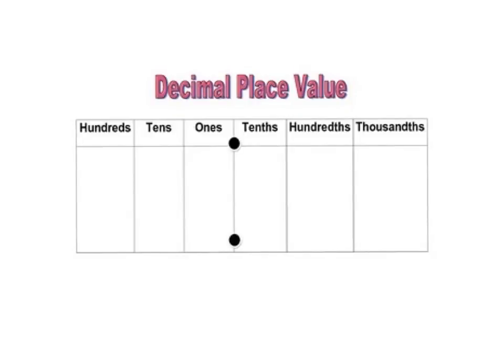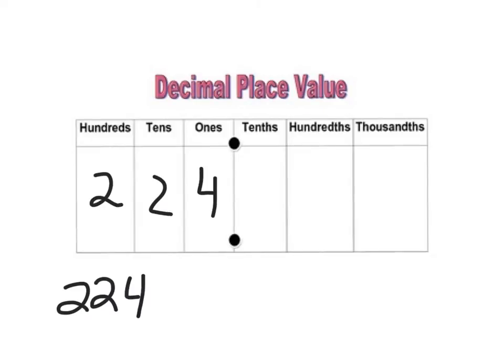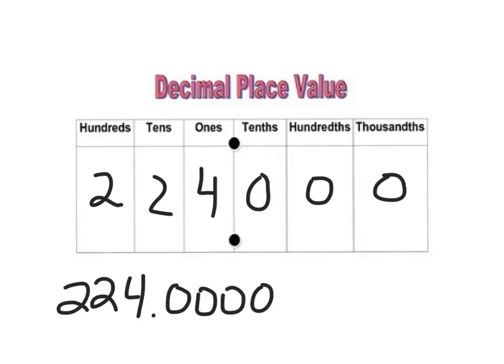It is important to remember that all numbers, even whole numbers, actually have decimals. So if we look at the number 224, we would put our 4 in our ones column, our 2 in our tens column, and our 2 in our hundreds column. There are actually decimals behind it, but they're simply zeros — 224.0000 goes on forever. If it is only zeros behind a whole number, we don't normally write them. They're not relevant. But it is important to realize that the decimals do exist behind that line.